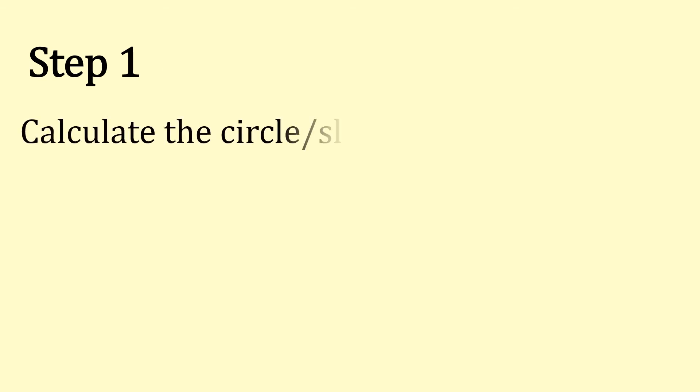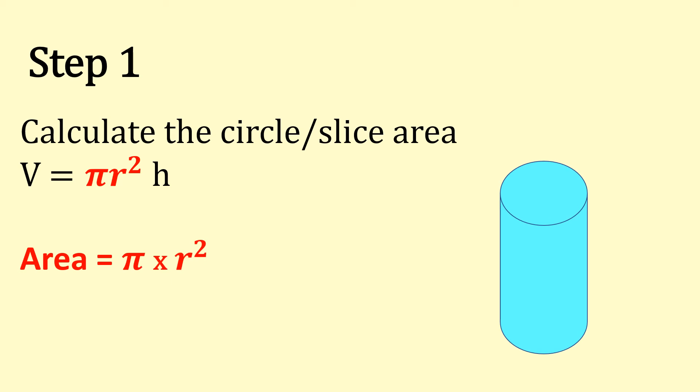Step 1. We need to calculate the circle or the area slice. So this is our πr² piece of the formula. So we know that the area is π times radius squared. So that's what we need to look for in our first step.